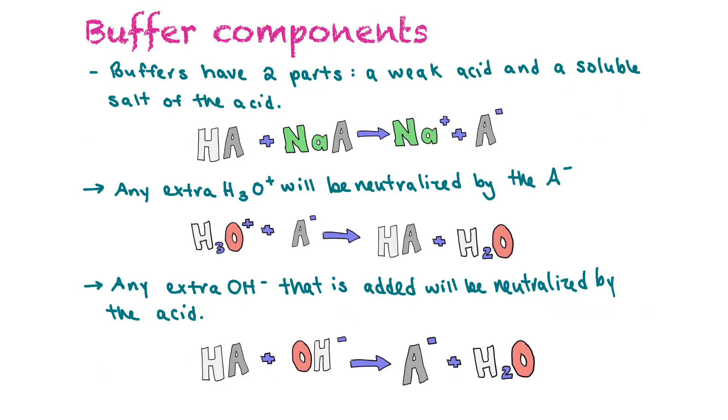So buffers have two parts: they have a weak acid and then they have a soluble salt of the acid. So this would be the example, and then this would dissociate into sodium and the anion.